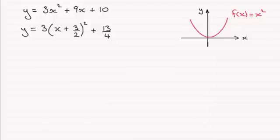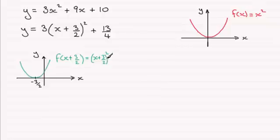So what we get is a graph something like this. That's the graph of x plus 3 over 2 all squared.